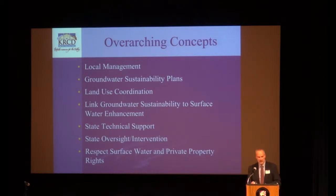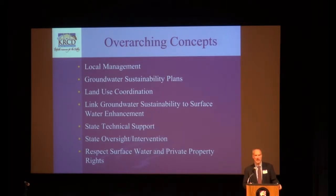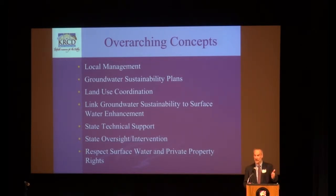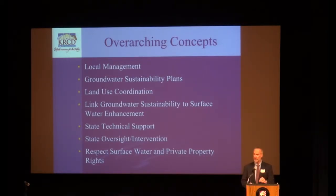There was an objective to point out that groundwater sustainability can only be achieved by two pathways: one is reduced demand, which has significant economic harm to a valley dependent upon that groundwater, or we can look at enhancing surface water supplies and achieve sustainability through that pathway. A lot of discussion about the roles of state agencies ultimately defined roles for the Department of Water Resources and a separate oversight or intervention role for the State Board, with the intent that those intervention points be very clearly defined. Finally, a policy objective was to recognize and respect existing surface water rights and existing private property rights to use groundwater.